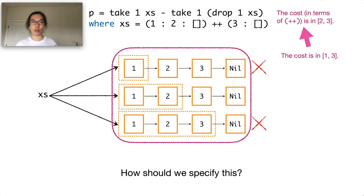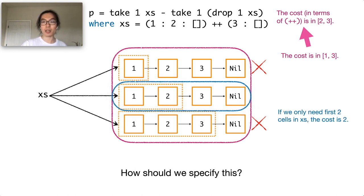We do that by utilizing another kind of specifications, specifications based on under-approximations. Let's say, if we only need the first two cells in xs, then the cost is just 2. Each kind of specification has pros and cons, so we use both of them in practice.